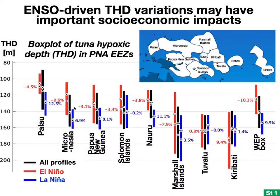Some of the largest ENSO-driven variations in tuna vertical habitat space occur within the EEZs of those eight PNA nations. A box plot of ENSO-driven variations in tuna hypoxic depth within these eight EEZs, laid out approximately from west to east, shows pretty big changes between El Niño and La Niña. Variations in tuna hypoxic depth of this magnitude can really affect tuna catchability with common surface fishing gears, potentially leading to overfishing when you have habitat compression in El Niño years, or fish escaping too much during La Niña years.